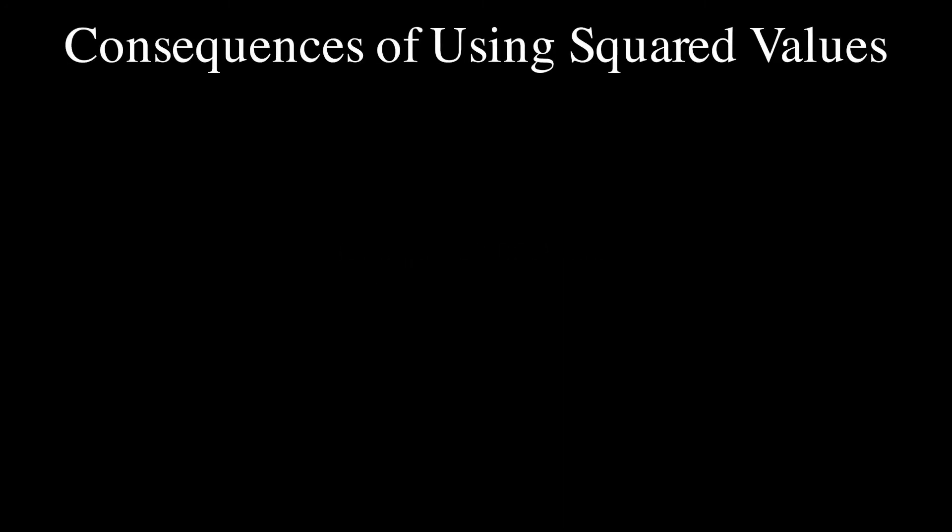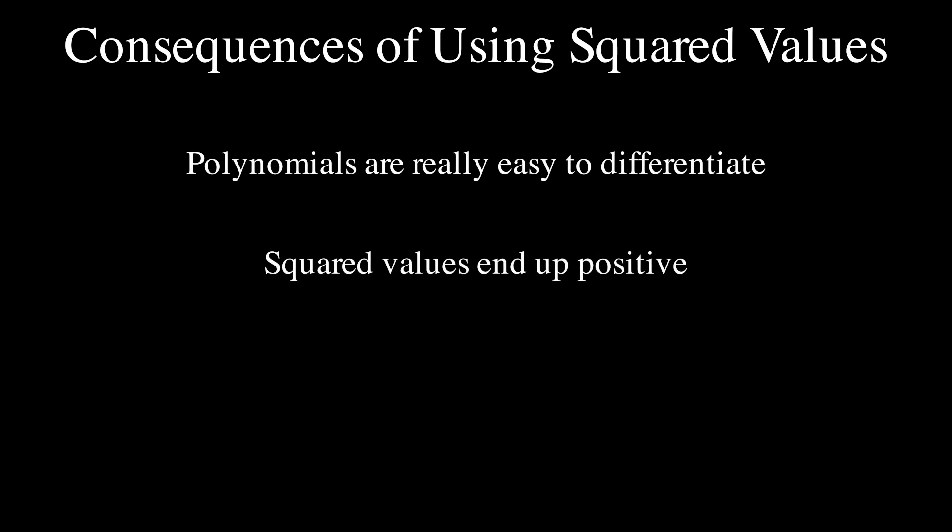This reason is mostly due to mathematical convenience. Absolute values are just really annoying to work with as we've seen. Instead of using absolute value as distance, mathematicians decided to use squared values. Squared values are much less annoying. For one, polynomials are really easy to differentiate. Also, squared values end up positive, which is really important.